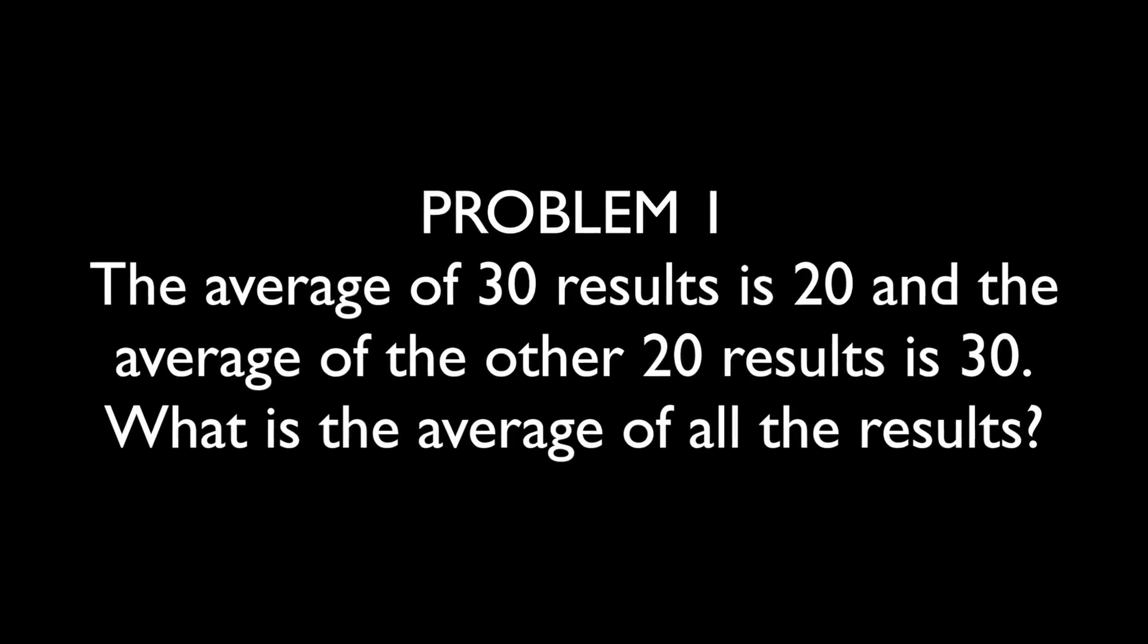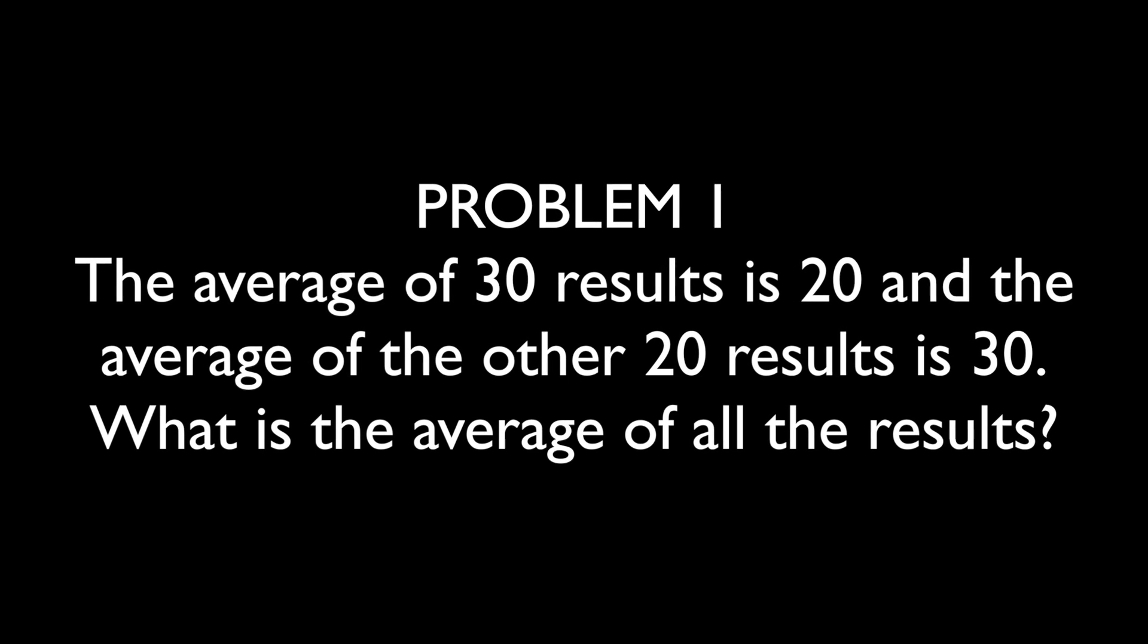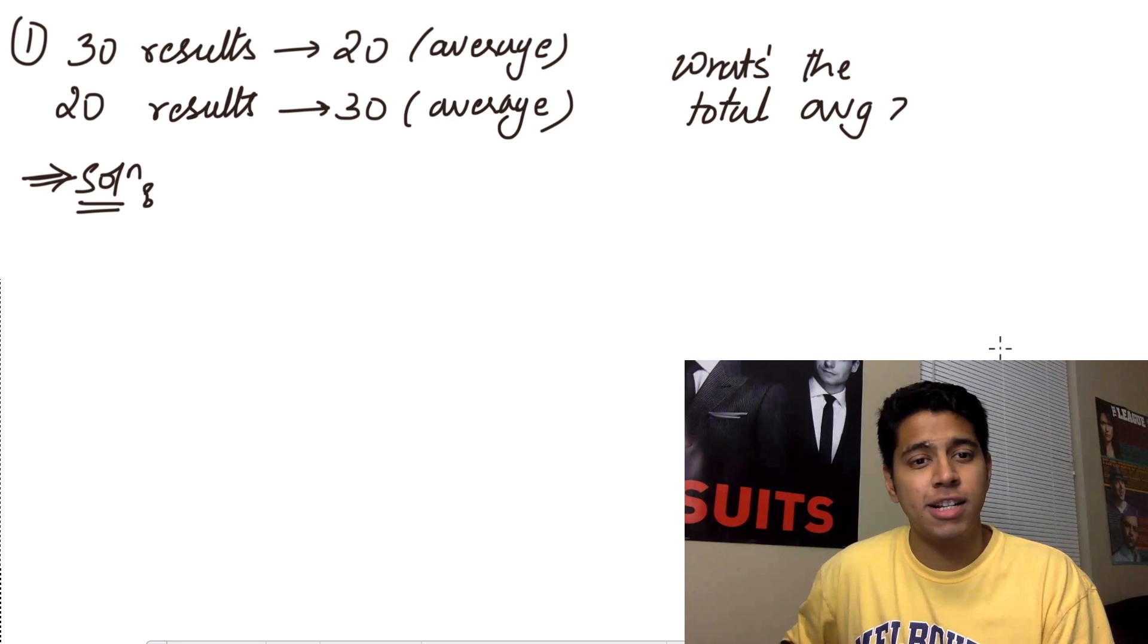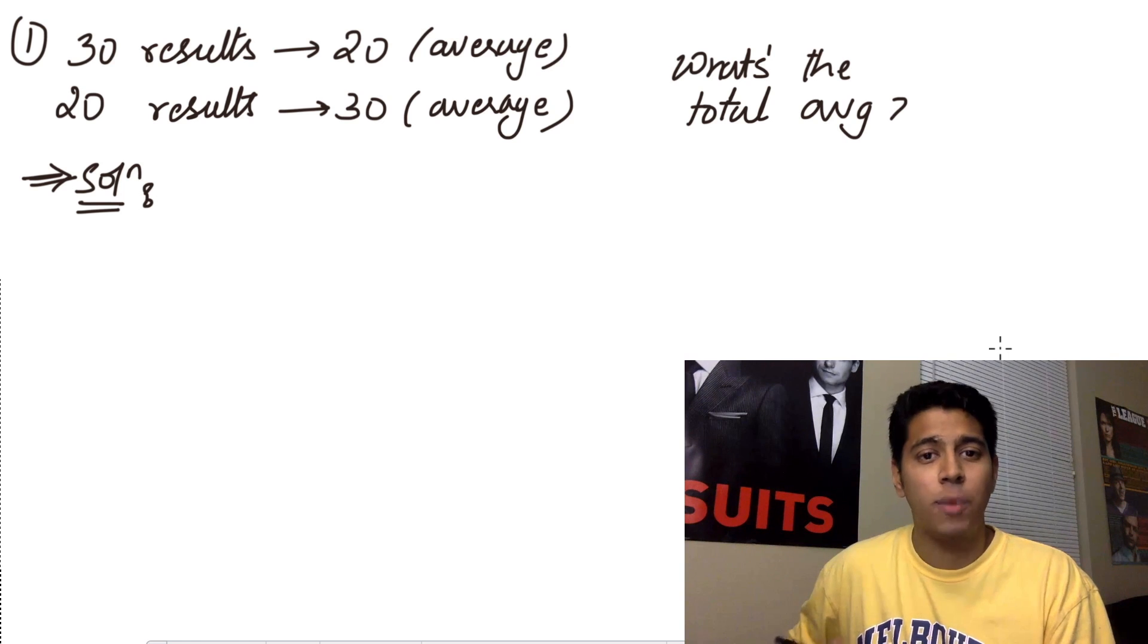Here's your first sum. For your first sum they've told you that you have the average of 30 results to be 20 and you have the average of 20 results to be 30. So what's the total average?